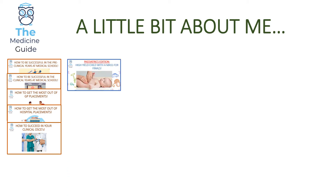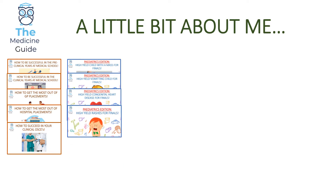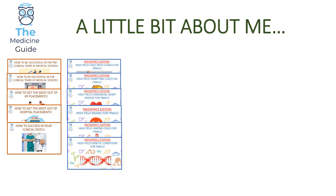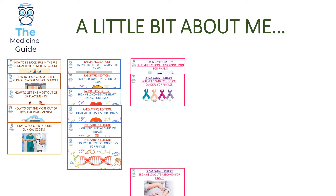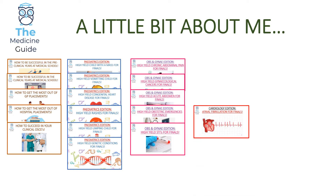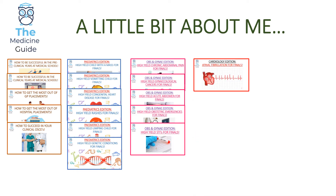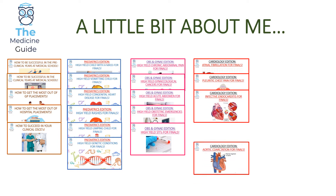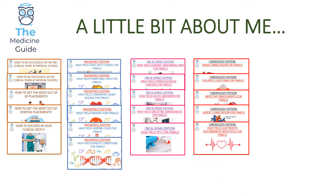I've also got a paediatrics range focusing on the high yield child with a mass for finals, high yield vomiting child, high yield congenital heart disease, high yield rashes for finals, high yield limping child, and high yield genetic conditions for finals. In addition I've got an Obs and Gynae edition focusing on high yield causes of chronic abdominal pain, high yield gynaecological cancers, high yield acute abdomen, high yield obstetric emergencies, high yield STIs, and also a cardiology edition covering atrial fibrillation, pleuritic chest pain, infective endocarditis, aortic coarctation, and high yield electrolyte disturbances with ECGs for finals.